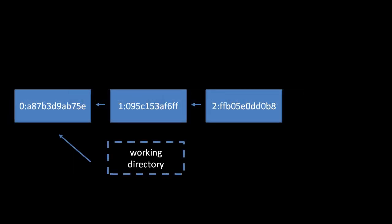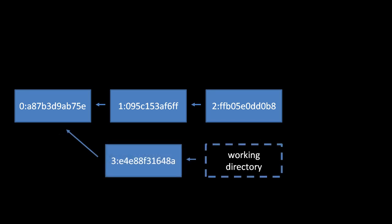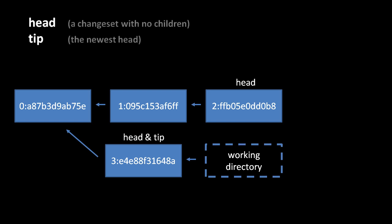For example, if we've updated the working directory's parent back to the first change set and then committed, this would create a change set whose parent is local revision zero. What we've done effectively is create a new head and a new tip. In Mercurial, a head is a change set with no children, and the tip is the newest head — the head with the highest local revision number.